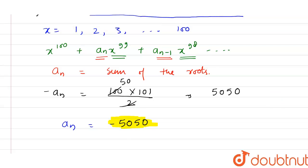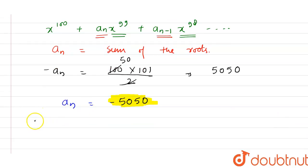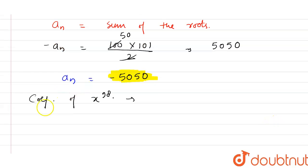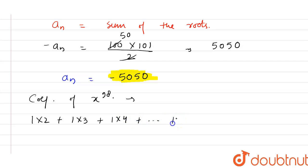Now let's find the coefficient of x raised to power 98. Here we take roots 2 at a time, so this is 1 into 2 plus 1 into 3 plus 1 into 4, up to 1 into 100, and similarly plus 2 into 3, and so on, up to 99 into 100.